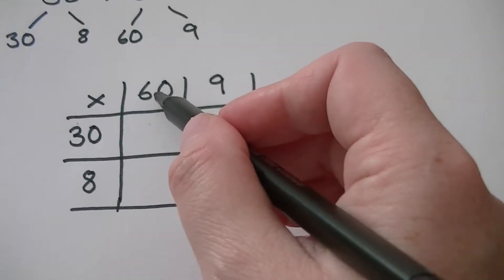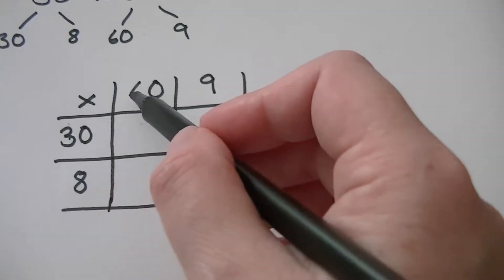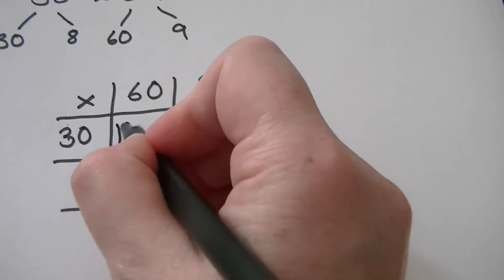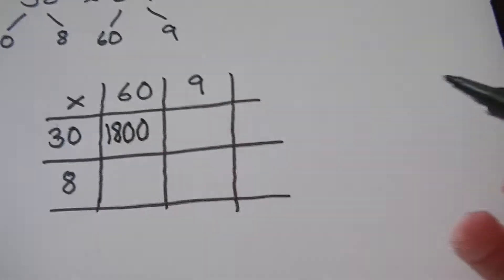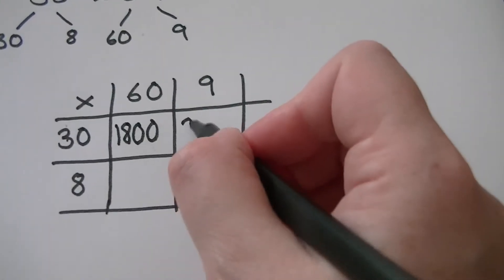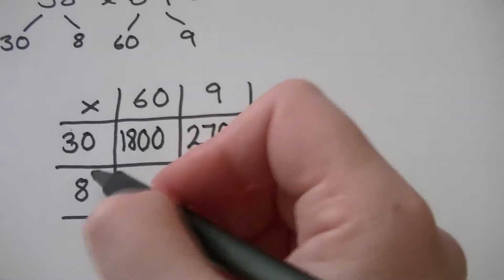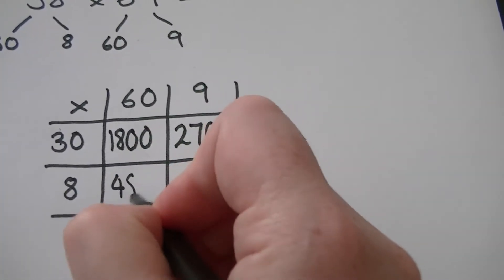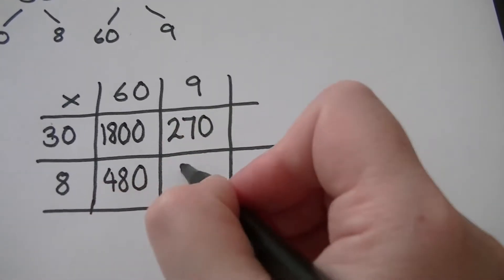Now we're going to multiply the numbers and put the answer in the blank boxes. So we've got 30 times 60. Well I can use my smile multiplication to do that. Six threes are 18 and then I've got that zero there and that zero there. Three nines are 27 and I've got that zero over there. Six eighths are 48 and I've got that zero there, and eight nines are 72.